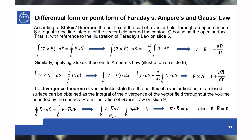This implies that the volume integral of divergence of D equals the integral of rho dV, coming from the integral form of Gauss's law, where the surface integral of D dot dS equals the total charge enclosed. Equating these two and removing the volume integral, we get del dot D equal to rho_v. This is the point form of Gauss's law. Rho_v has units of coulombs per meter cubed. Similarly, del dot B equals zero.